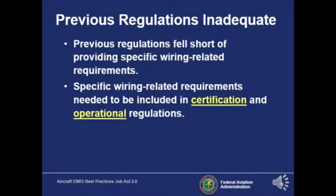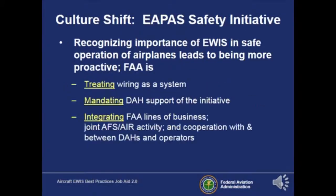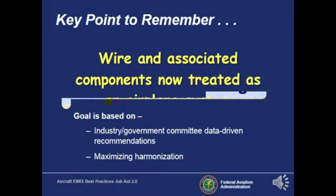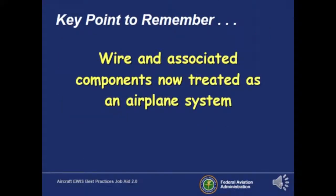Now the FAA has beefed up its certification and operational regulations. The FAA realized that the wiring system is crucial to safety, so they introduced a safety initiative that treats the wiring as a system, mandating and integrating operator support with the manufacturer. The goal was to enhance safety by improving all aspects of electrical wiring systems, with harmonization between mechanics, operators, manufacturers, and the FAA. A key point: wire and associated components are now treated as an entire system within the aircraft.